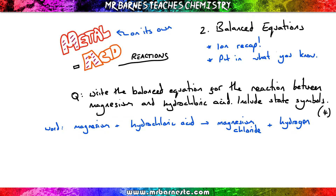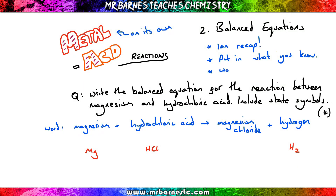From your periodic table you'll be able to see that magnesium has the symbol Mg. Hydrochloric acid you just need to know is HCl. And hydrogen you also need to know is H₂ — it goes around in pairs, so every single time you put hydrogen down, write H₂. So all that's left is our magnesium chloride.